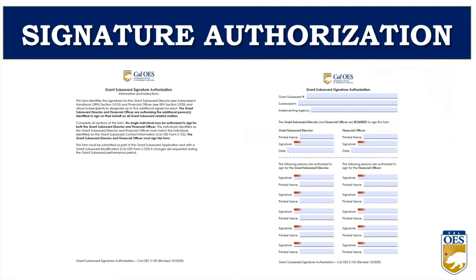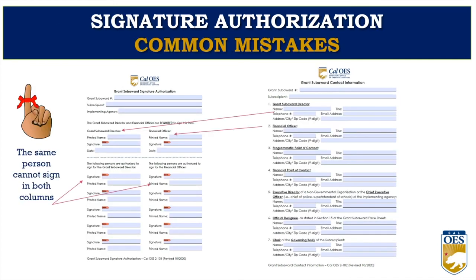This is the signature authorization form — instructions on the left, current version on the right. When we review this form, we compare it to the project contact information form to ensure the grant subaward director and financial officer are the same authorized personnel. You can list alternate individuals with authority to sign on their behalf, but one person cannot be an authorized signer in both areas. It is best to have at least one authorized signer for each position. If you need to change authorized signers, you must submit a grant subaward modification to Cal OES — it takes approximately two weeks to process, so submit the modification request immediately when changes are made internally.